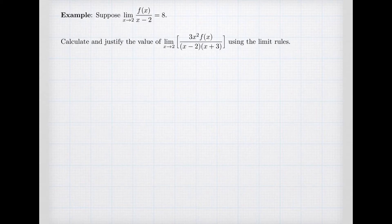We're ready to set up our example. Suppose I know the limit of f(x) divided by (x-2) as x goes to 2 has a value of 8. And I want to calculate and justify the value of a new expression. It's a quotient of 3x² times f(x) all over (x-2) times (x+3) as x approaches 2 using our limit rules.